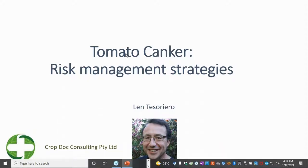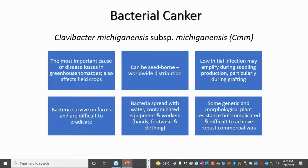Hello everybody. I'll be talking about tomato canker, or bacterial canker of tomatoes, and it's probably one of the most important diseases in greenhouse tomatoes. It also affects field crops, and it seems to affect growers at the top end in the really high technology houses right down to the lower technology houses. It affects everybody, and one of the main reasons is that it's transmitted by seed.